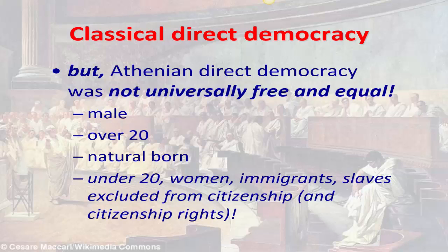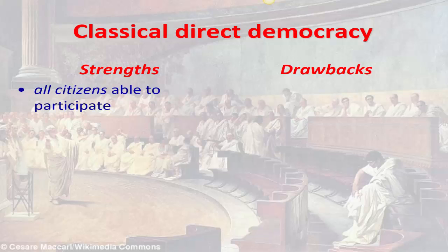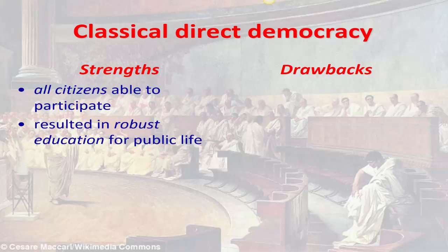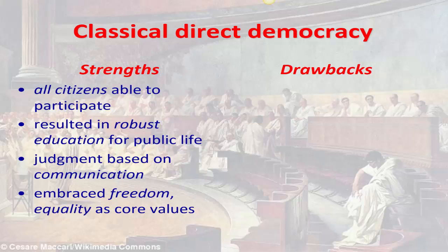So this was by no means a perfect system, but classical direct democracy made important contributions that inform how we think about democratic government and politics today. All citizens were able to participate in the process, which resulted in a robust educational system for public life — if you were going to participate in law and government, you needed to be able to communicate, understand, and make decisions. Education was a core virtue in Athenian life. Judgment on matters of public policy was based on communication and rhetorical persuasion. Classical direct democracy embraced freedom and equality as core values.